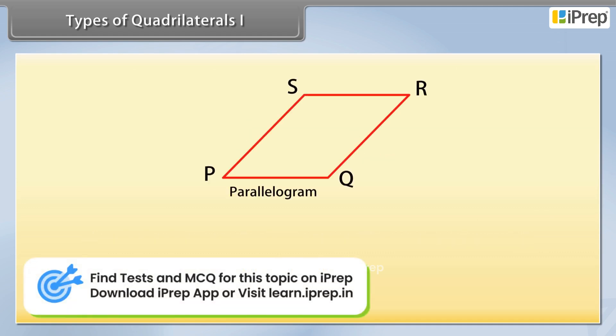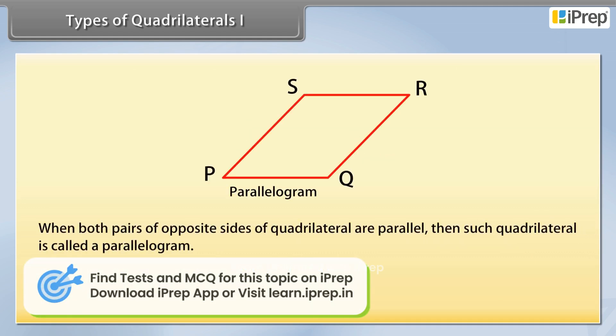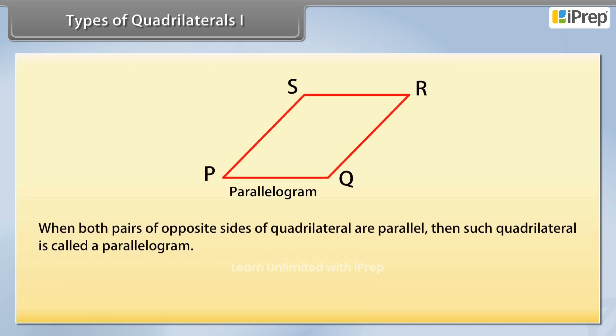Next is parallelogram. When both pairs of opposite sides of a quadrilateral are parallel, then such quadrilateral is called a parallelogram. Here opposite sides PS and QR and SR and PQ are parallel. So PQRS is a parallelogram.